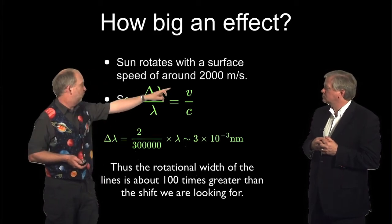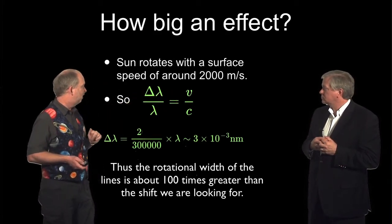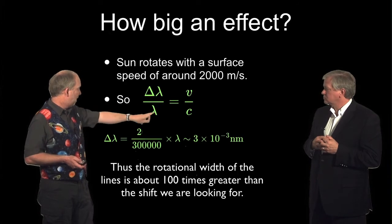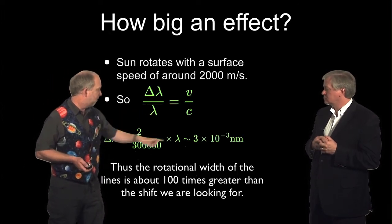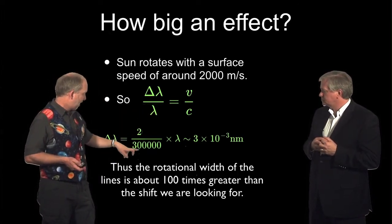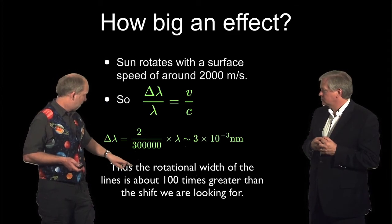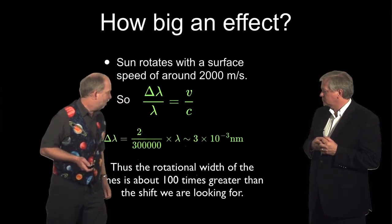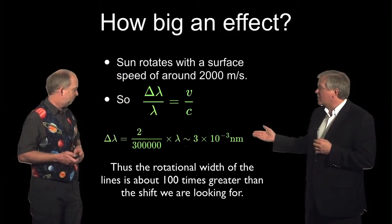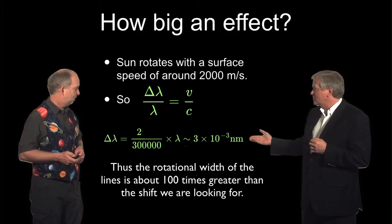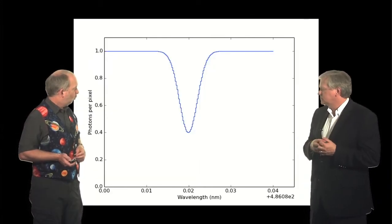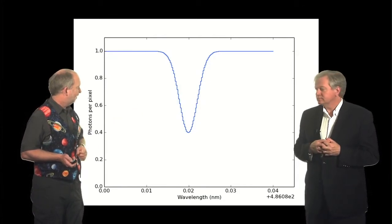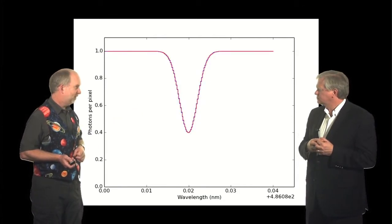Having calculated how broad, so typical surface speed of the Sun is about 2,000 metres per second. The change in wavelength over the wavelength is the velocity divided by the speed of light. So 2 over 300,000 comes out as about this. So that's almost a factor of 100 larger than the effect we need to measure.